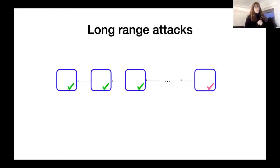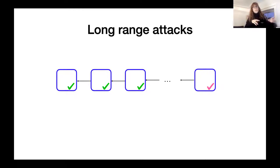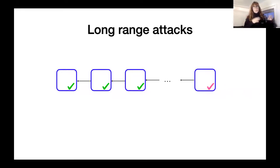I'm going to illustrate a long-range attack so people understand the severity. I'll give my explanation in a proof-of-stake context because it's easier to understand, but similar attacks exist on Filecoin and proof-of-space blockchains — they're just a bit more tedious to describe.